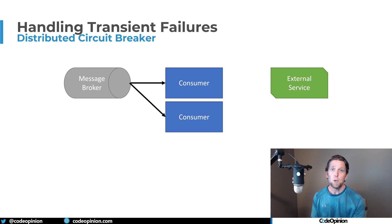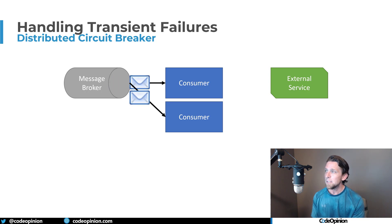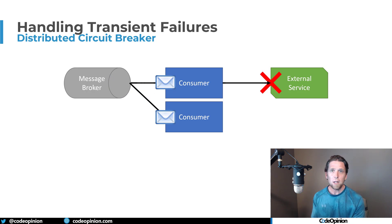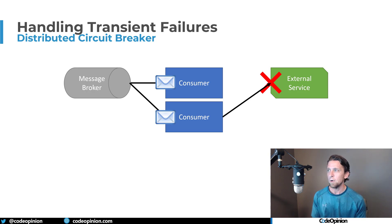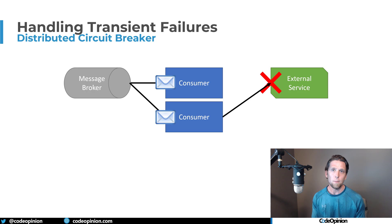If you want to process more work, you're not going to have one consumer — you're going to have many consumers processing messages concurrently. If they're processing messages concurrently, when they both get a message and both need to interact with that external service, the first one is going to fail and go through its lifecycle of retrying and exponentially backing off. That means two consumers are potentially waiting a really long time before they fail and end up going to the dead letter queue. So you may want a distributed circuit breaker to let other consumers know: don't even bother trying the external service, it's not up right now.